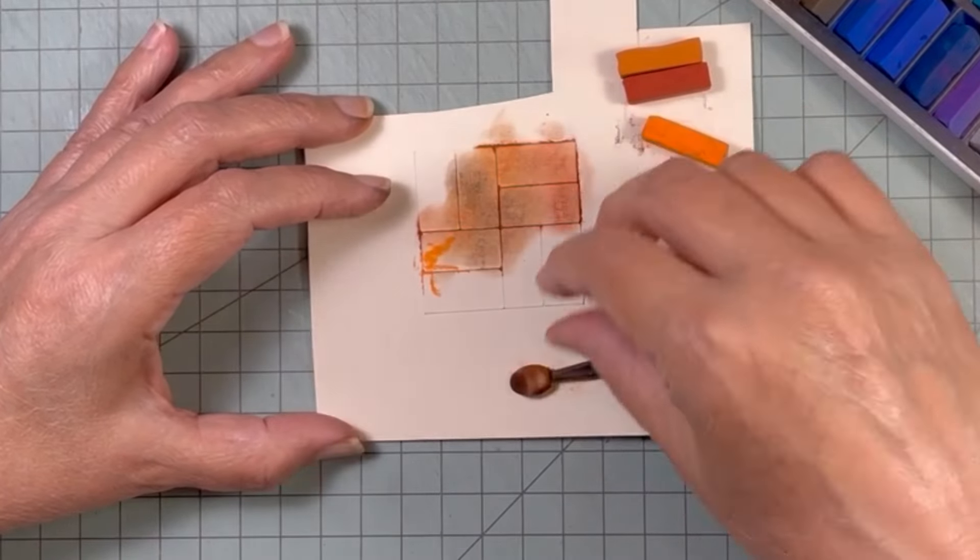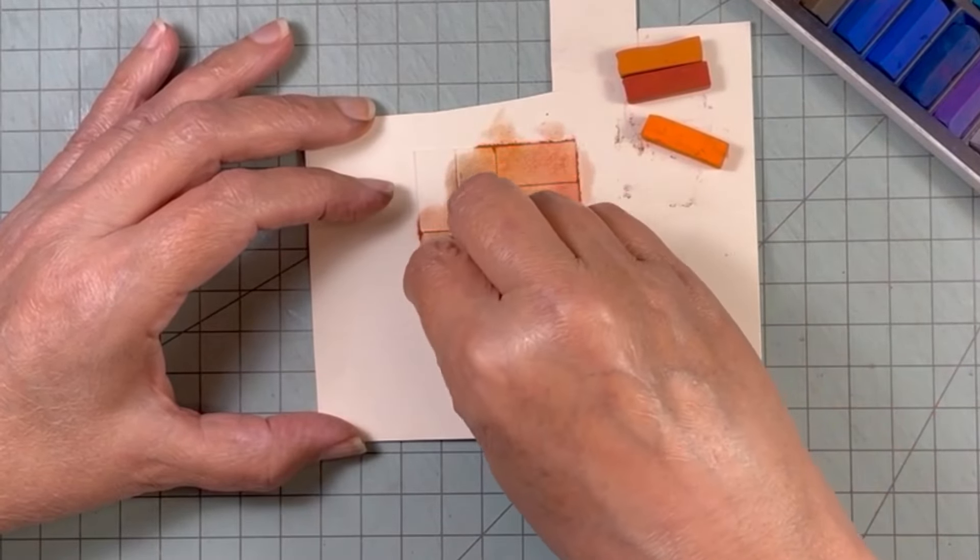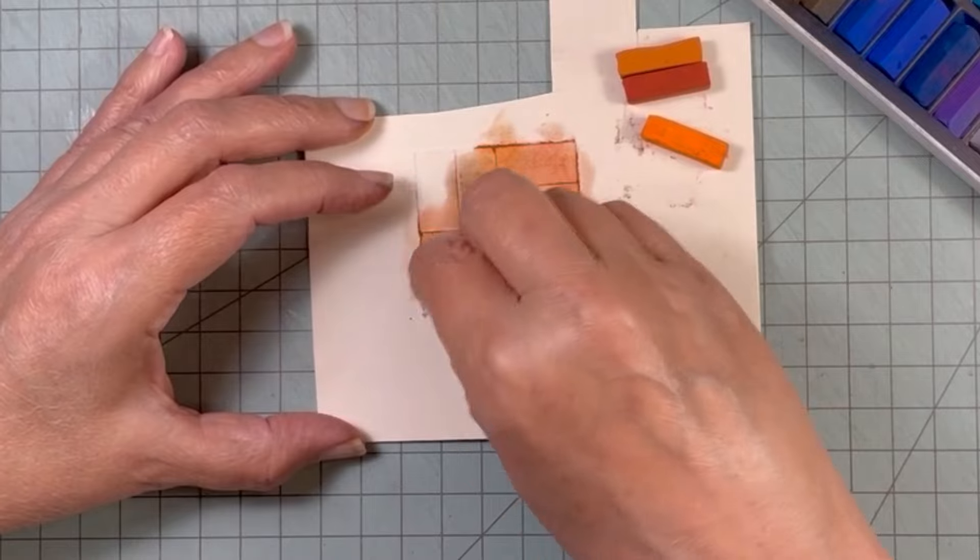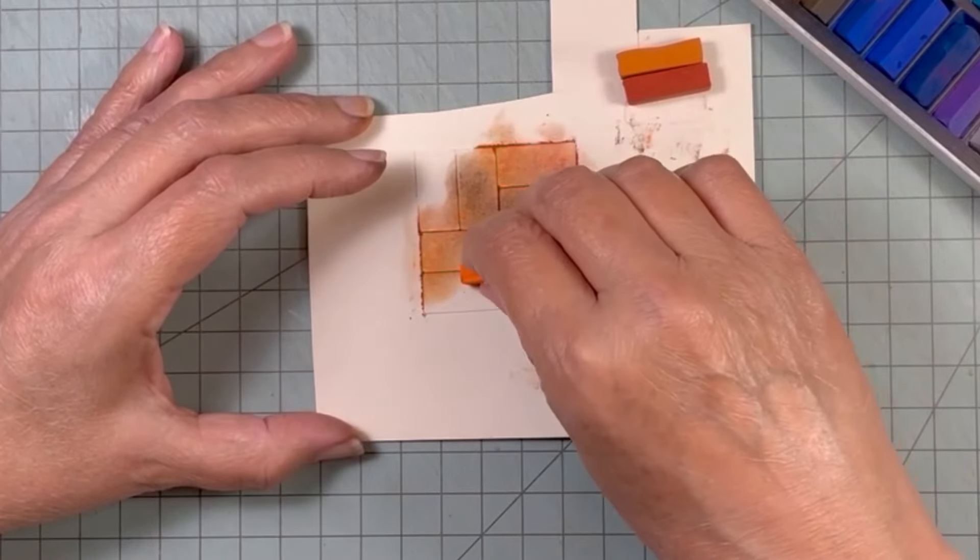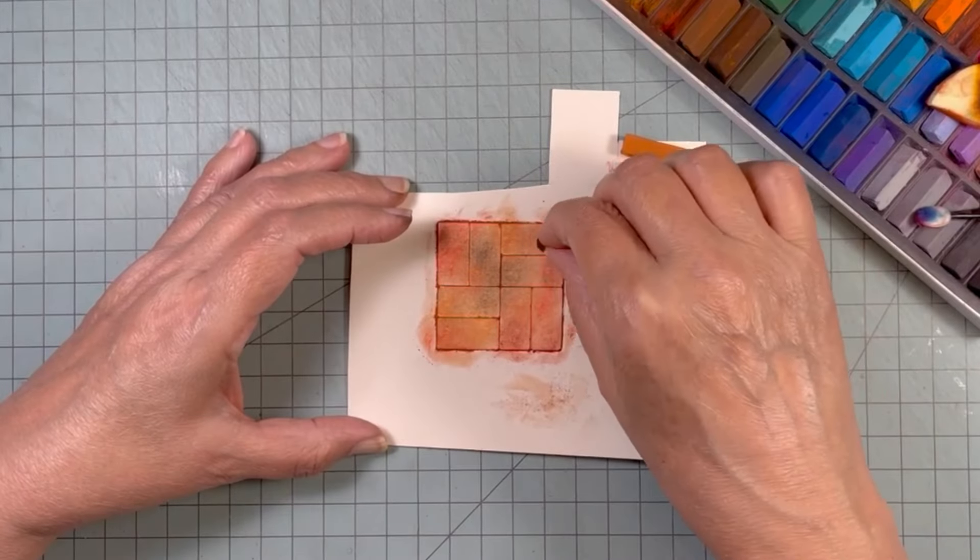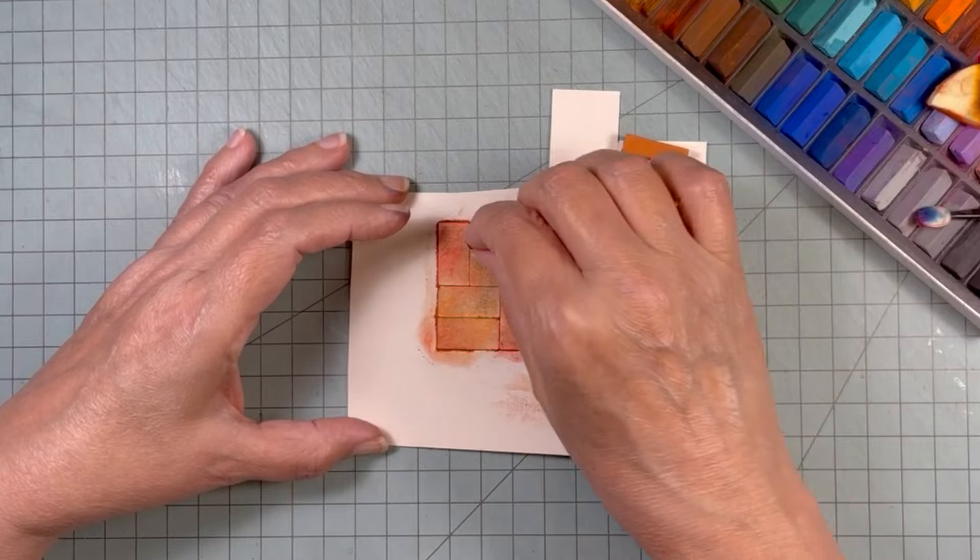One thing I did like about doing it this way was the way that the chalk pastels darken the lines in between each tile naturally. Just like when I was coloring before I had to go over it and darken it some.